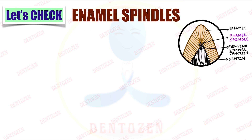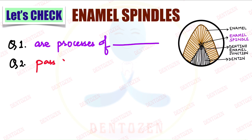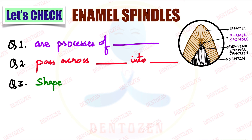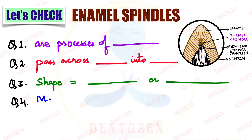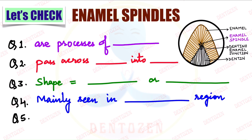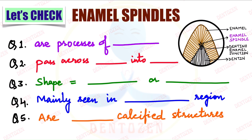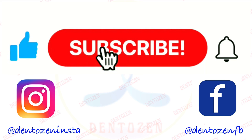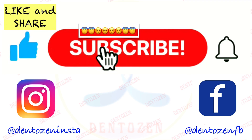Let's check what you have learned: enamel spindles are coming from processes of which cells? They pass across from where into where? Their shape is similar to what — what shaped structures are they called? They are mainly seen in which region of the teeth? And they are what type of calcified structures — hyper or hypo? That is all for this video; tap the like button, share with your friends, and good luck for your exams.